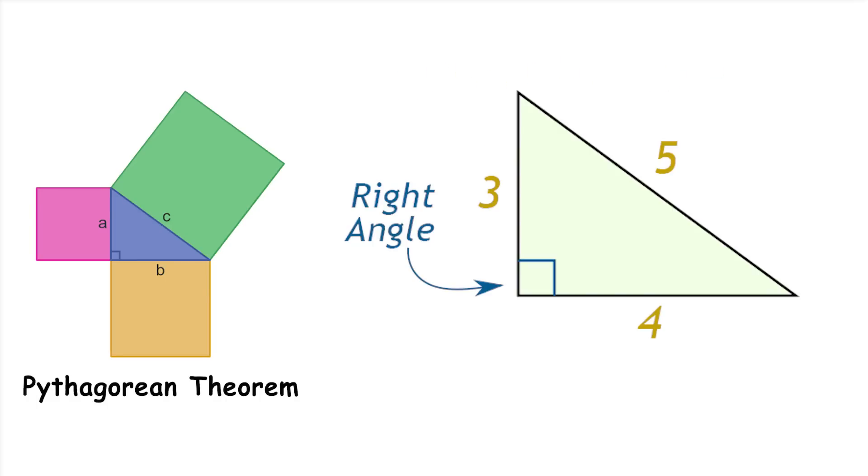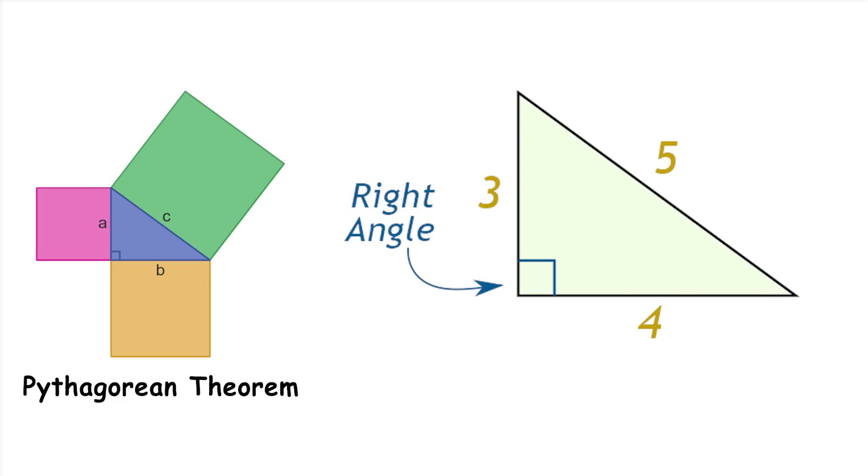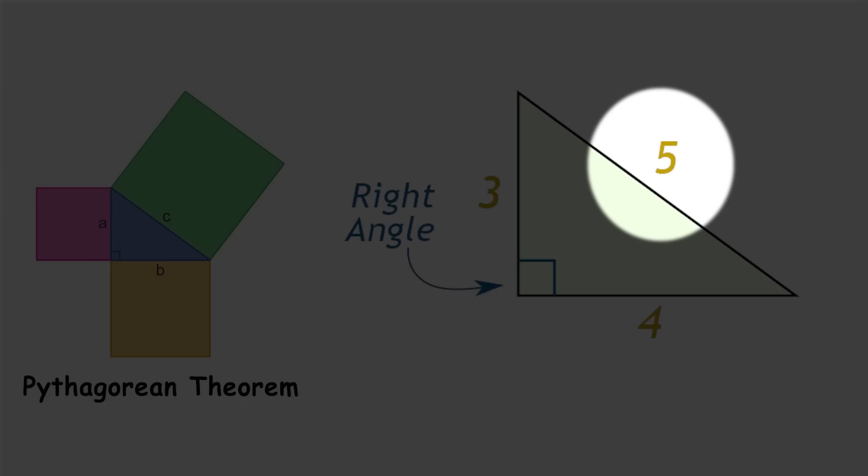Imagine a right-angled triangle. If one side is three units long and the other side is four units long, you can find the length of the longest side by using the formula three squared plus four squared equals five squared, so the longest side is five units.